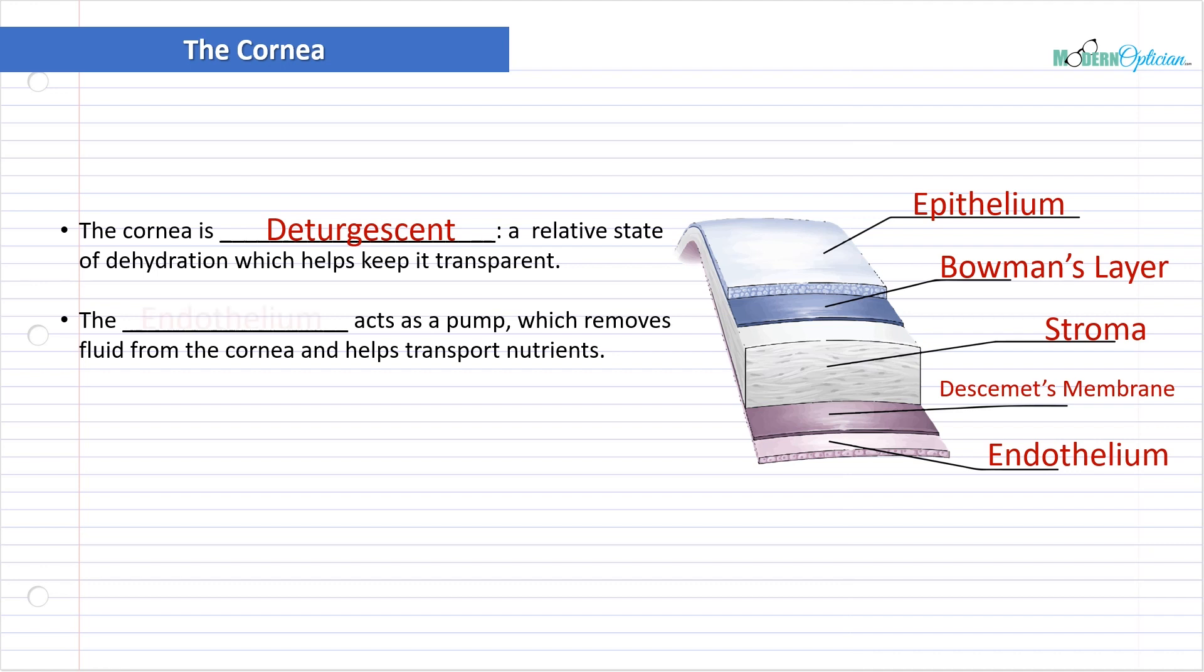We're going to start with the bottom. The endothelium acts as a pump which removes fluid from the cornea and helps transport nutrients. The anterior chamber is right behind the cornea, and the posterior surface of the cornea makes contact with the aqueous humor inside the anterior chamber. This pump, the endothelium, allows fluid to pump in and out of the cornea, maintaining that level of detergescence. This is what allows it to be transparent and refractive.